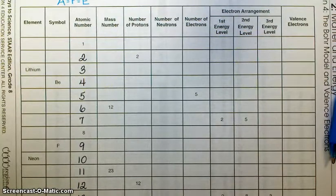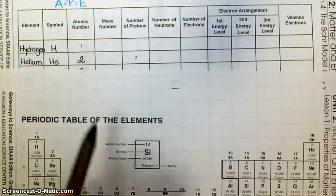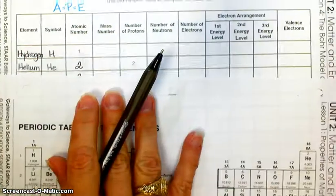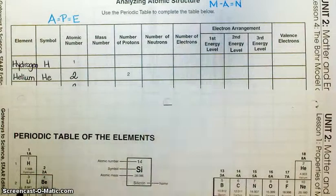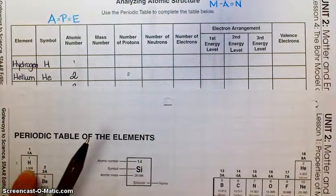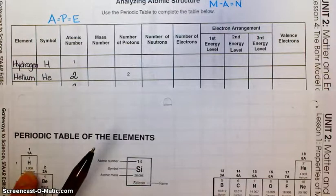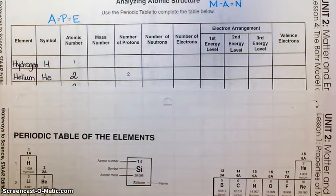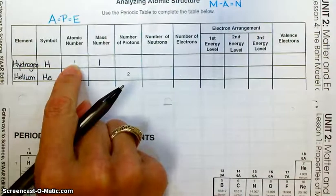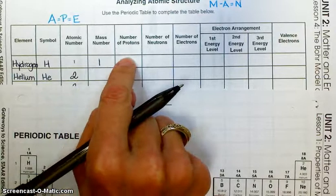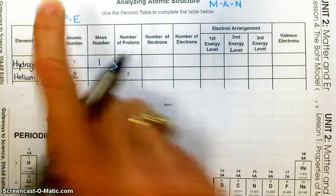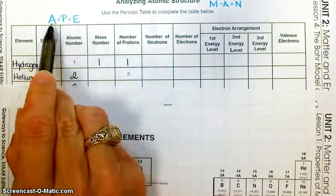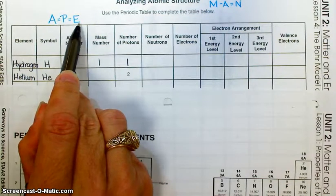Fill in the first two rows for hydrogen and helium. For hydrogen: symbol H, atomic number is one. The mass number — you look at the periodic table, take the atomic mass 1.008, and round it to the nearest whole number, which gives us one. The number of protons equals the atomic number, so protons equals one. Atomic number also equals the number of electrons, so we have one electron.